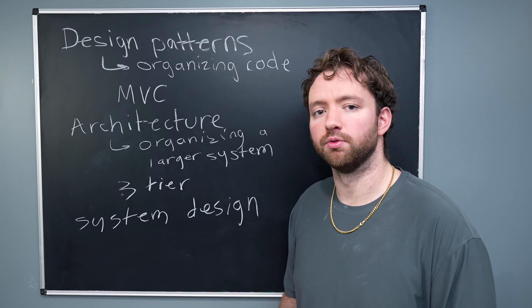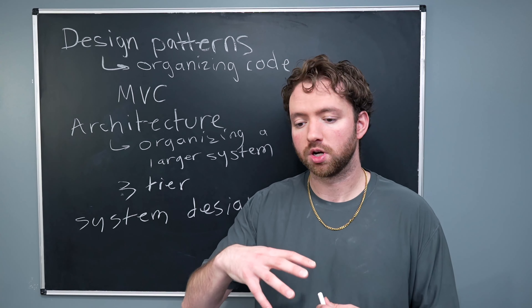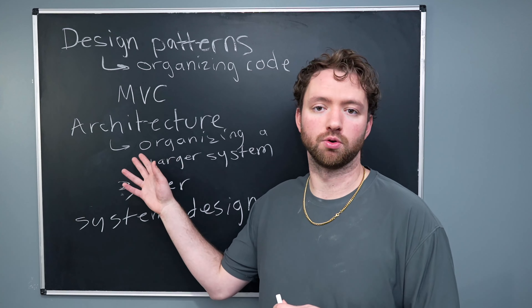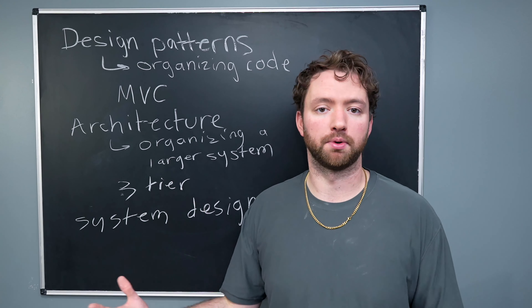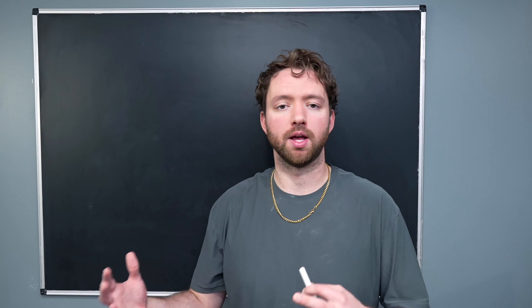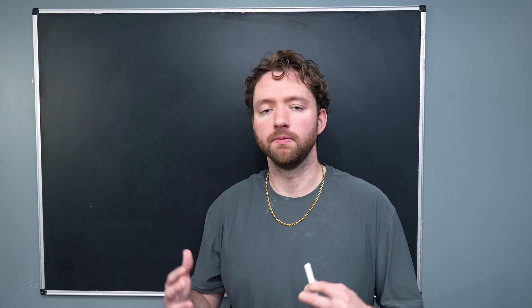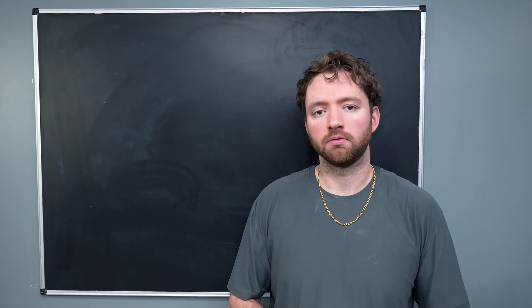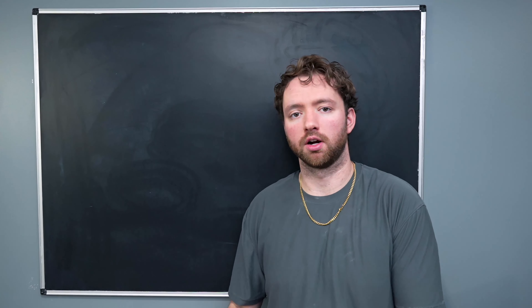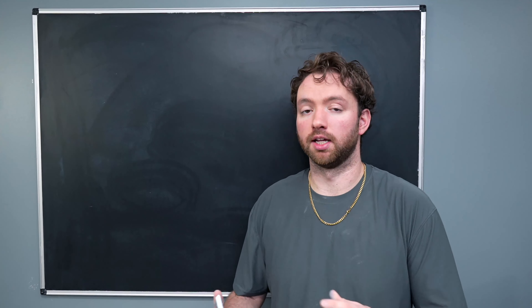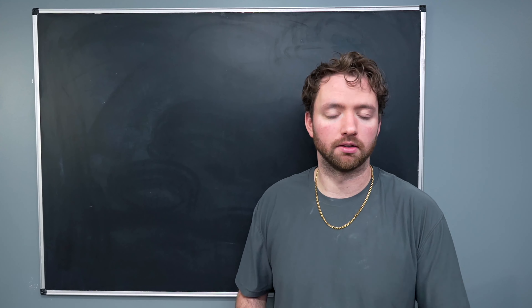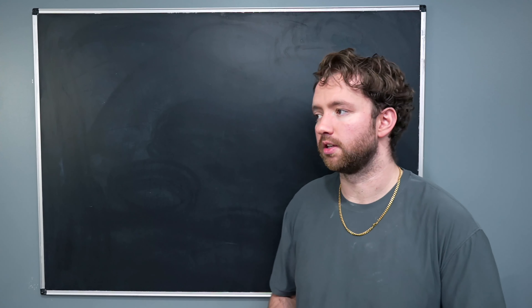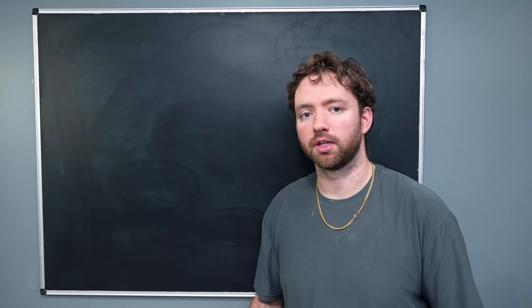So we'll talk about common problems, walk through how we might solve those, and talk about the common architecture you might end up with. As we go through this series, we'll cover examples like scaling an app from just one user up to millions of users and the potential architectures you could use to make that possible. Let's continue by going a little bit deeper into MVC and the three-tier architecture — then we'll build upon that to discuss microservices and scaling.